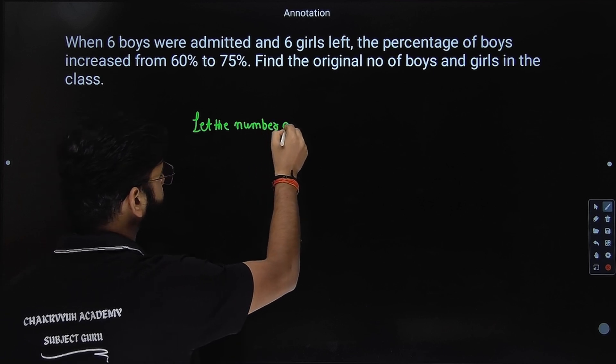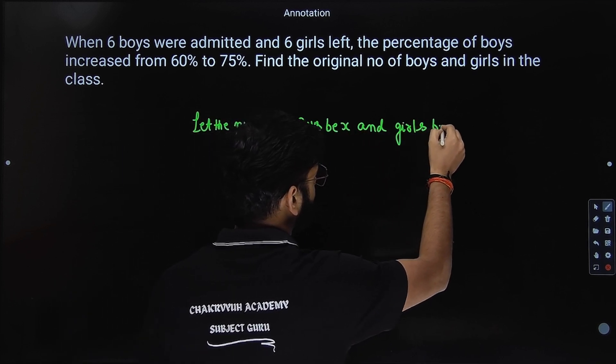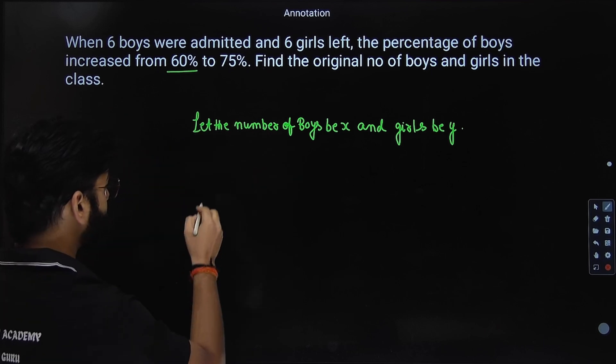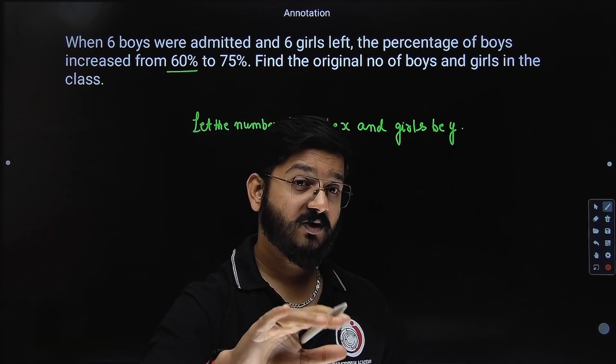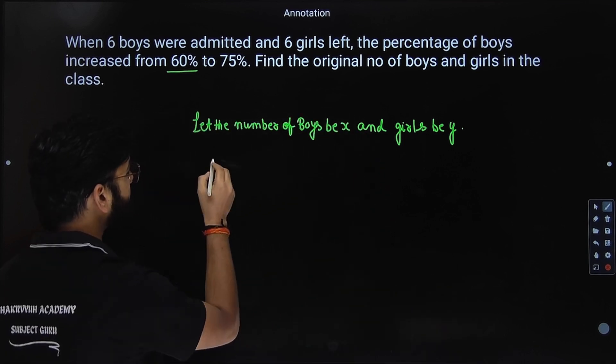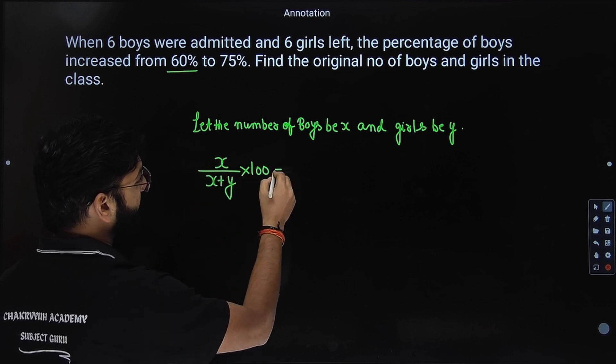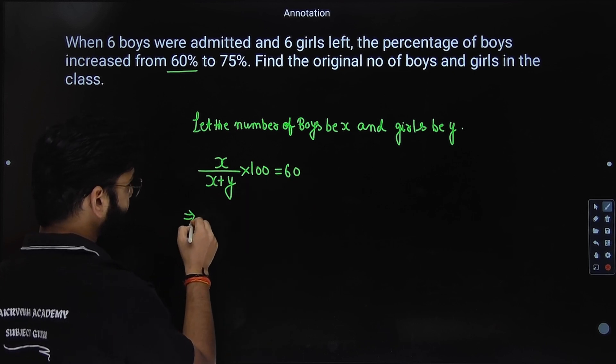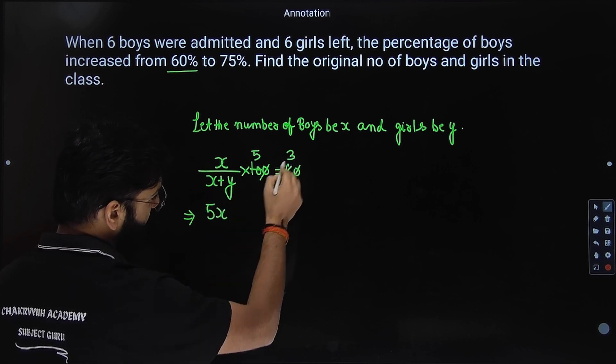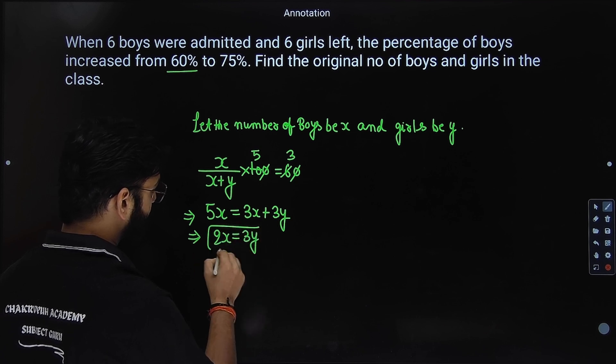Let the number of boys be x and girls be y. So initially, what is the percentage? 60% are boys. So how do you write percent? Original divided by total. So how will I write boys percentage? Number of boys divided by total number of students. So number of boys are x divided by total number of students x plus y. So this will give you the percentage of boys: number of boys divided by total number of students into 100. So that is 60. So let us simplify this. So we can cancel, 2 times 5 is 10, 2 times 3 is 6. So this will be 5x equal to 3x plus 3y. So we have 5x minus 3x, 2x equal to 3y. This is our first equation.